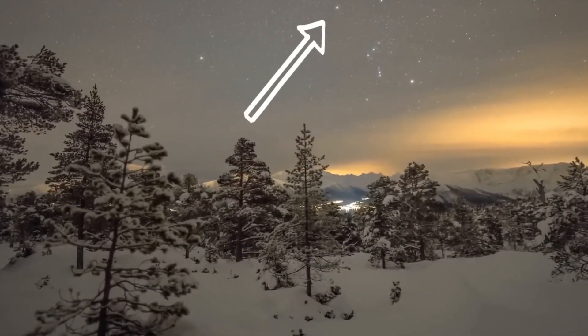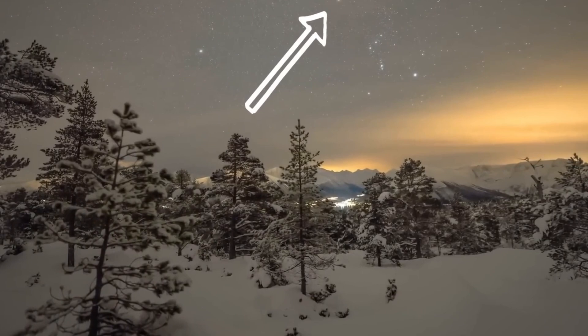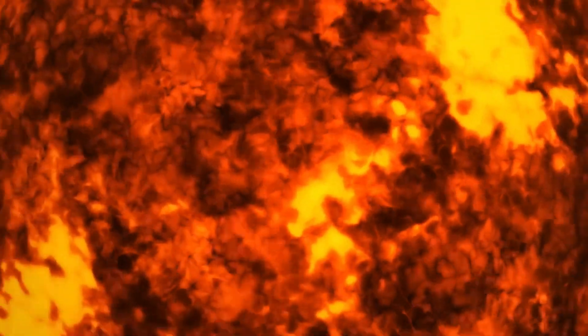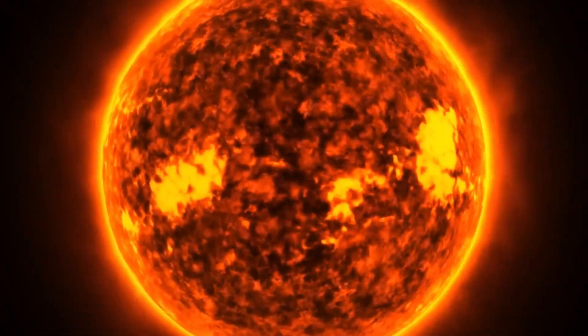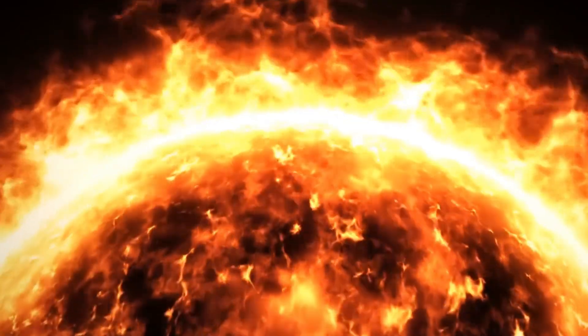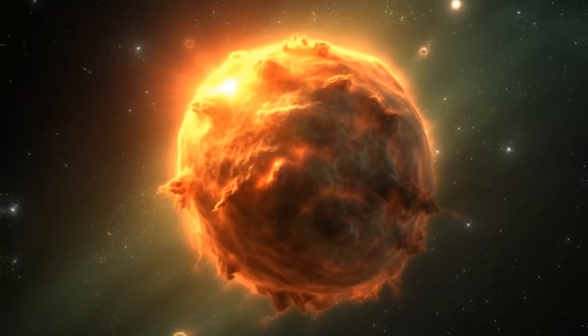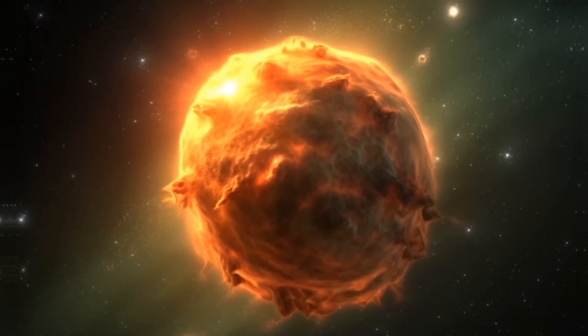Here's the cosmic catch. Betelgeuse resides a staggering 650 light-years away from us. This means that even if it were to go supernova right this moment, we wouldn't witness the breathtaking celestial fireworks for another 650 years. That's because light takes its own sweet time to traverse the vast expanse of space.